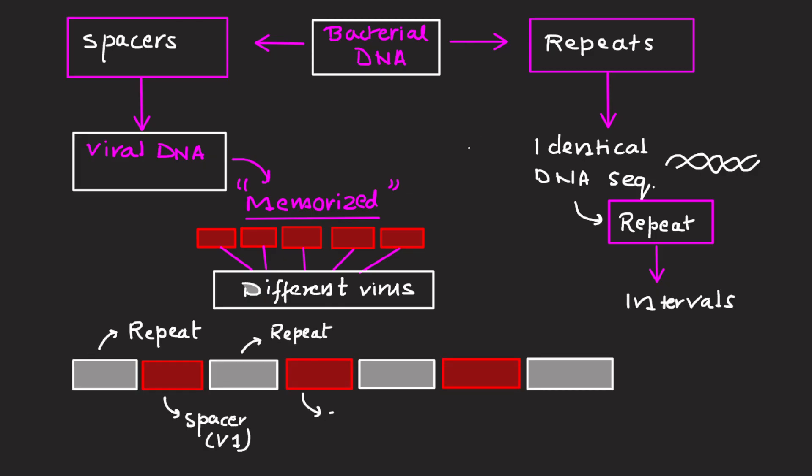So it looks like this: repeat, spacer virus 1, again repeat, spacer virus 2, again repeat, spacer virus 3, and so on. An easy example is a photo album. Each repeat is like a photo frame and spacer is the actual picture inside it, showing the face of a different virus.